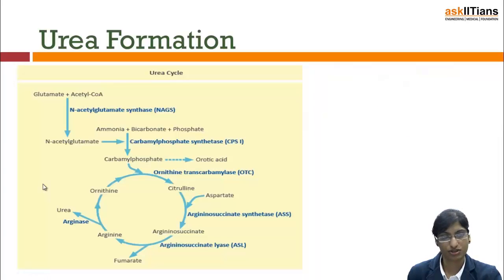So next thing, urea formation. How does it occur? It occurs in two places, two locations. That is, one is matrix of mitochondria, mitochondrial matrix, and one is in cytosol.